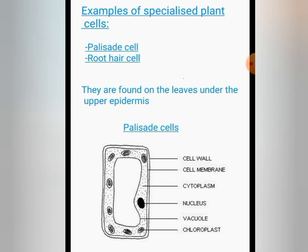We want to first look at the palisade cells. This is the structure of the palisade cell we are seeing here. We have the cell wall, then next to the cell wall we have the cell membrane, then the cytoplasm, then that black dot is the nucleus, then the vacuole, then the chloroplast.